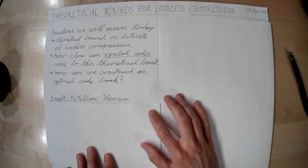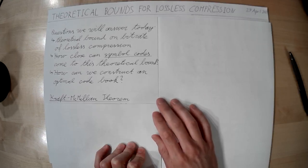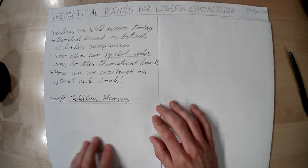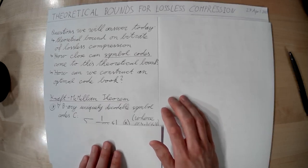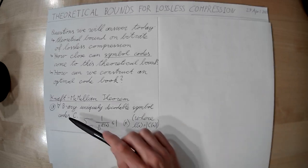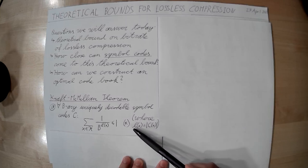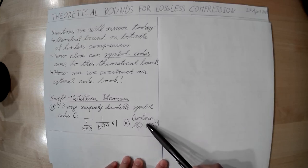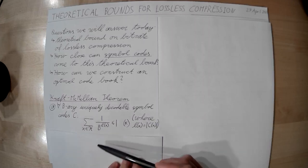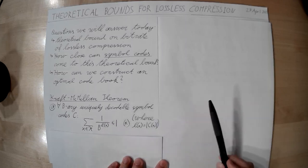In order to answer these questions, let's look at our first theorem: the Kraft-McMillan theorem. I'm going to partially follow the videos from the YouTube user Mathematical Monk, and I'll add references in the video description. The Kraft-McMillan theorem has two parts. Part A starts from a uniquely decodable symbol code C. The statement is that if we have any uniquely decodable symbol code C, the lengths of the codewords L(x) always satisfy: the sum over all symbols of 1/b^{L(x)}, where b is the base (typically 2), is not larger than 1.